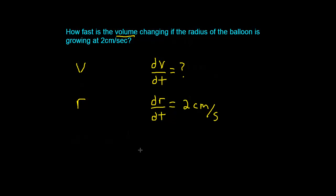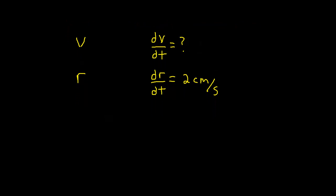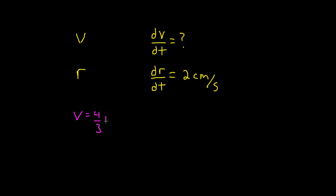Now like in any related rates problem, once you've identified the variables, and once you've identified all of your rates involved, you then have to relate your variables in some form of an equation. So I have to relate V and r in an equation, and the natural one is to use the volume for a sphere, which should be 4/3 π r³. So there it is. I have just my two variables, V and r.